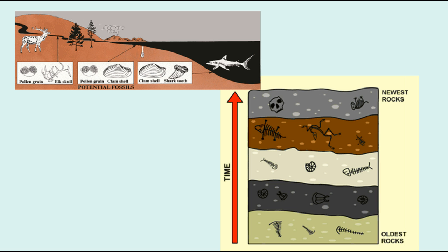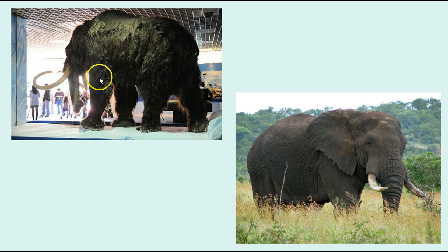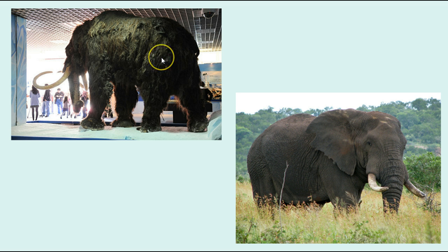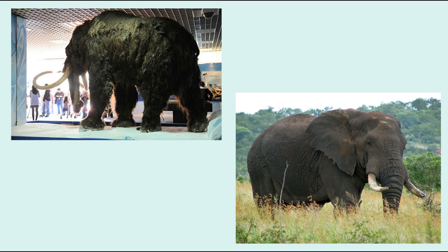When you look at fossils of ancient organisms — something like this woolly mammoth — it's very similar in size and morphology and structure to modern-day elephants, but also very different and lived in a different kind of habitat. We can see that there has been change over time in these organisms, but you can tell that they're closely related to each other.